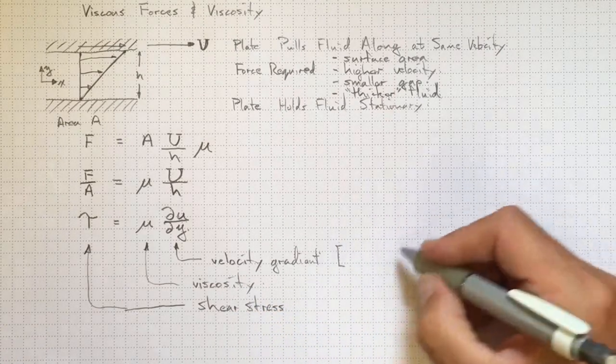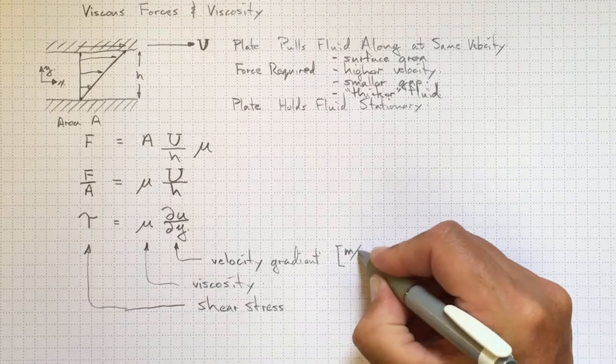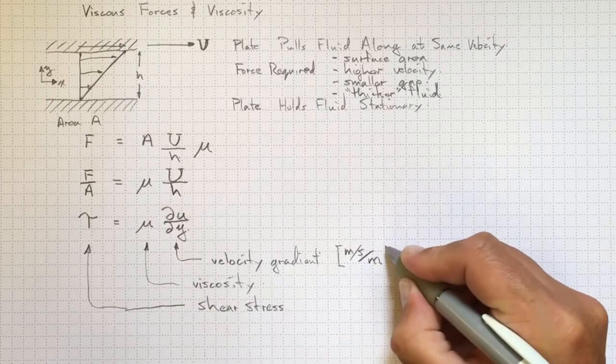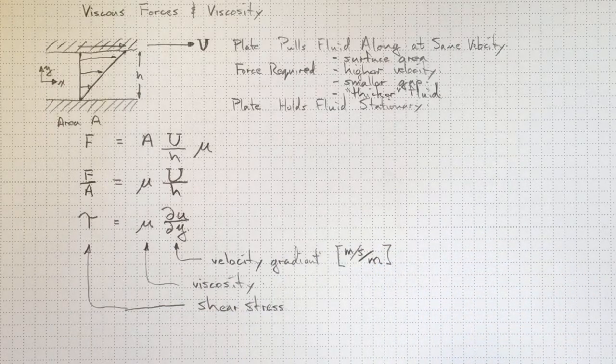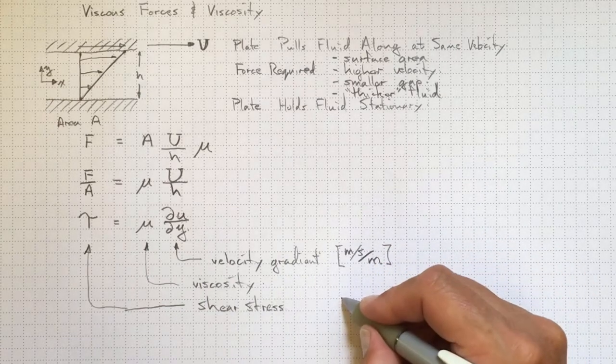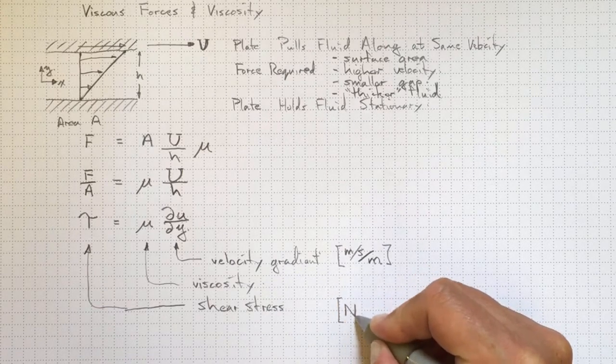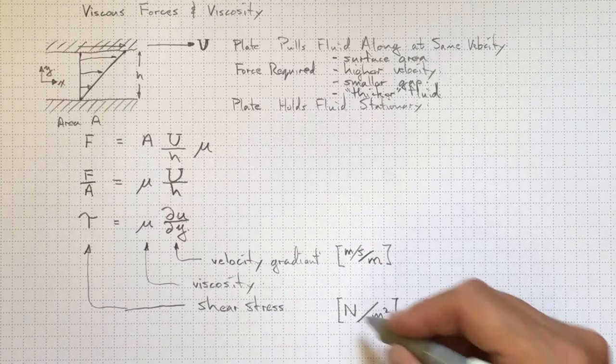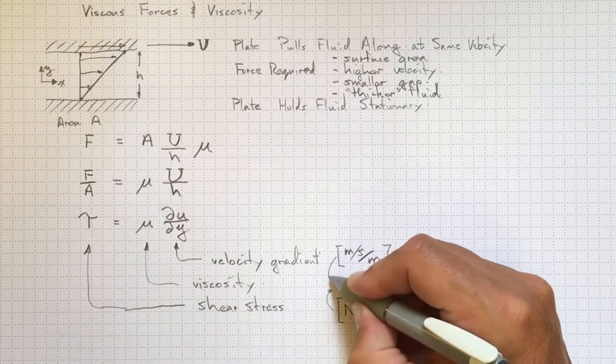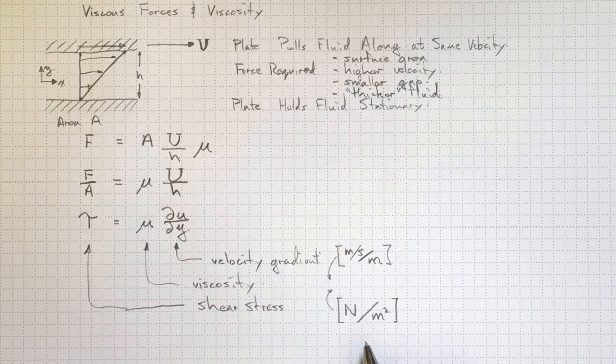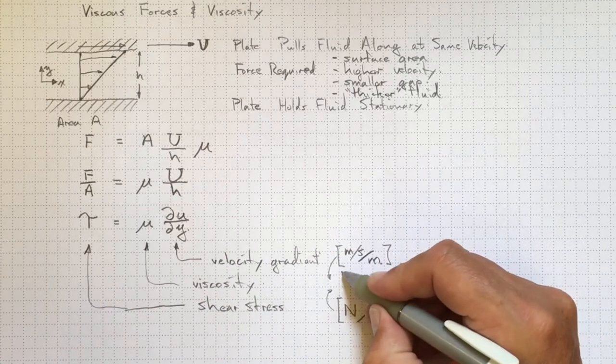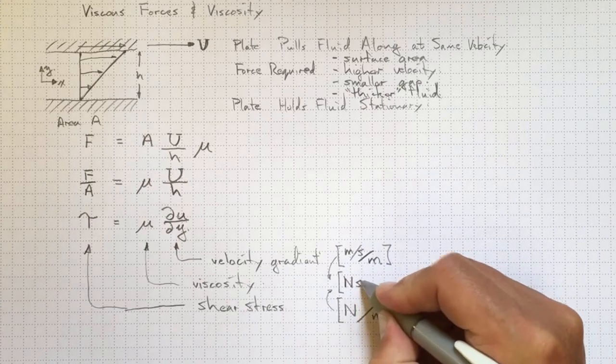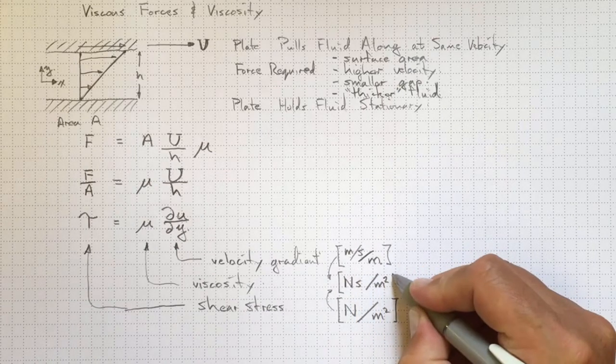The units for velocity gradient, well velocity is meters per second, and the distance delta y is in meters, so that's meters per second per meter. The shear stress will be in units of force, so newtons, divided by area, meters squared. And by looking at those and at this formula here and requiring it to be dimensionally consistent, we'll wind up with units for viscosity of newton seconds per square meter.